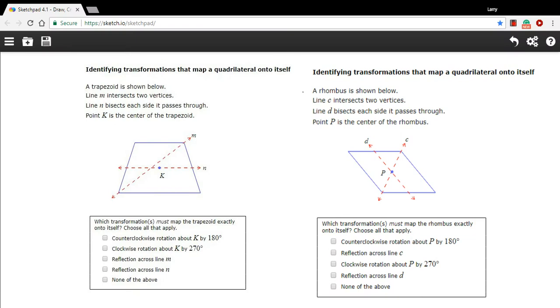In these problems we are trying to identify transformations that will map a quadrilateral onto itself. That is, after you apply the transformation it looks exactly the same. This has to do with symmetry and the kinds of transformations we're looking at are reflections and rotations.